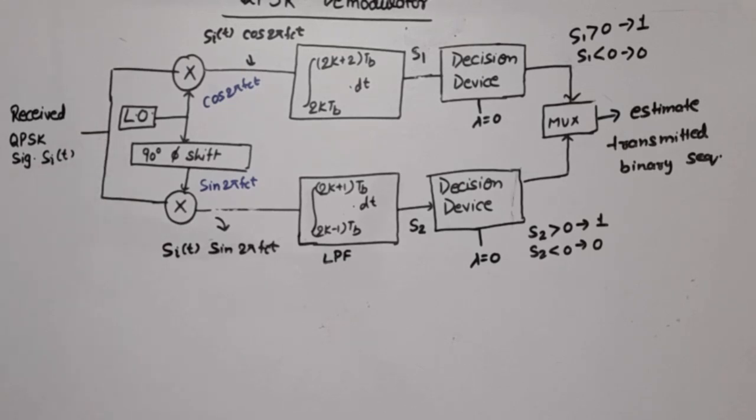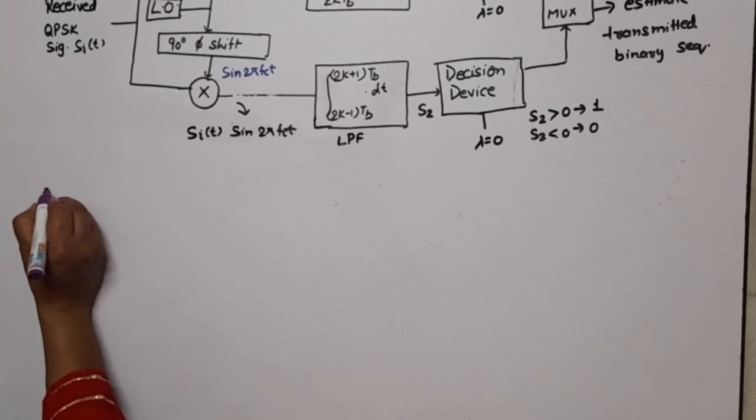In this detection, we used a local oscillator for generating the carrier signal. But there is another method in which we don't use a local oscillator. We extract the carrier from the received signal itself and then perform detection. Let's see how this works.